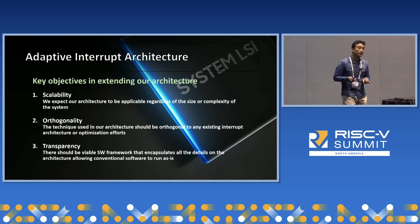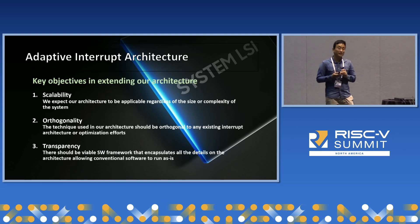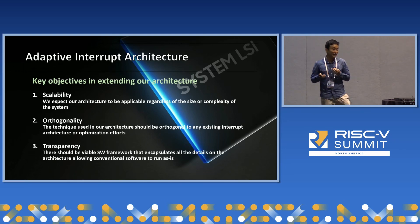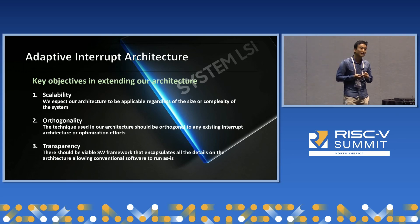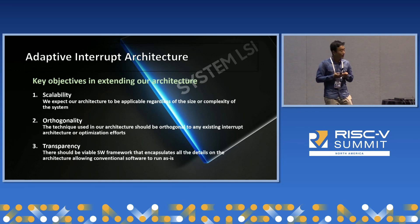We decided to extend our work with three key objectives. We wanted our architecture to be more scalable, so it's applicable across multiple different domains with different complexity, size, or performance requirements. We also wanted it to be orthogonal, so it can work on top of the existing architecture or existing optimization techniques without hurting the original purpose, while still gaining additional performance. Finally, we wanted to be transparent at the top-level software — we wanted user software to be able to run and benefit from our architecture without having to know about it or modify the code.